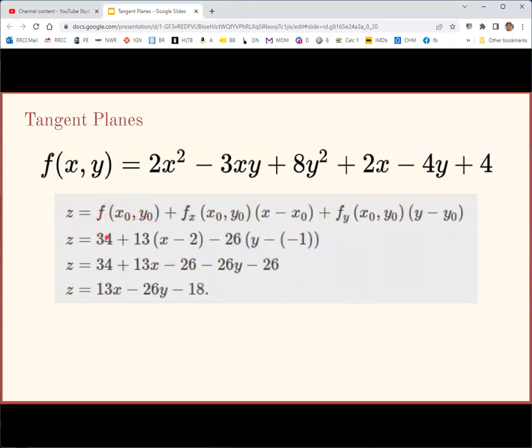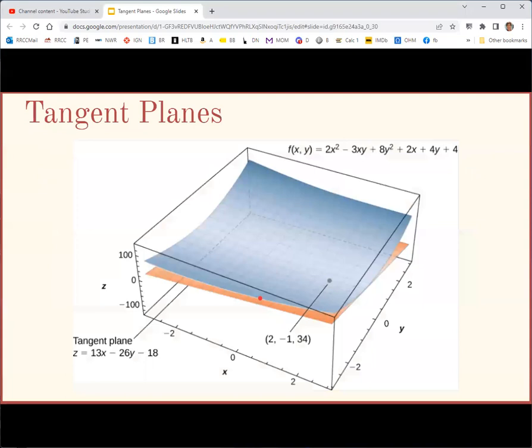These all appear in the tangent plane equation. The value of the function goes first, and then the derivatives go second and third. And then you have x minus x naught, y minus y naught. Remember x naught is 2, and y naught was negative 1. You can distribute and simplify this if you want, or you could even put it in the standard form that we saw earlier for the scalar equation of a plane. If you end up graphing the function in the tangent plane, you'll see the function is this curved sheet, and the tangent plane is a flat sheet that just touches it at just the right angle, so that it touches at that one point we're interested in and has the same slope as the surface does at that point.